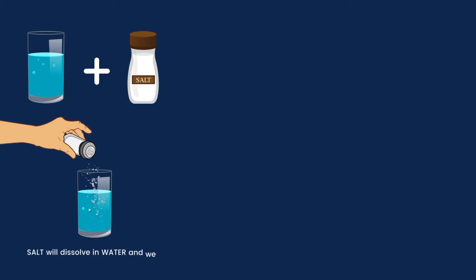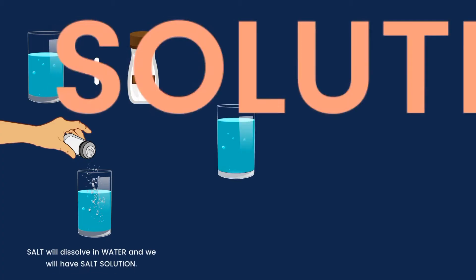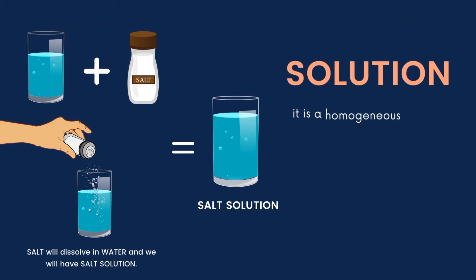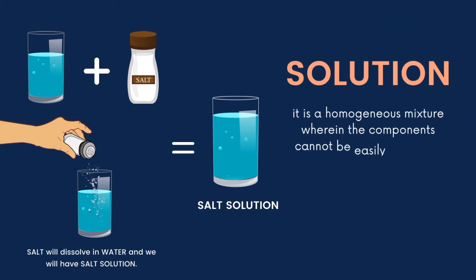For example, if we mix water and salt, we will have a solution. A solution is a homogeneous mixture. Since it is homogeneous, the components of the salt solution cannot be easily identified.